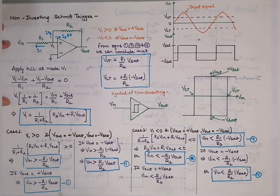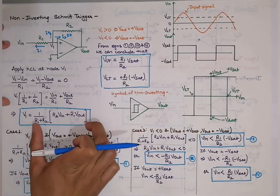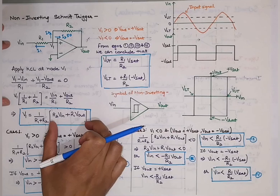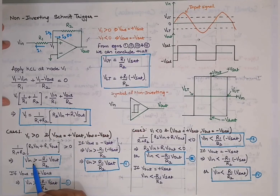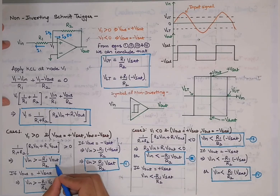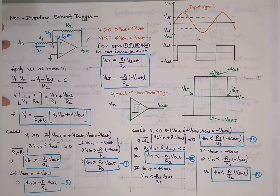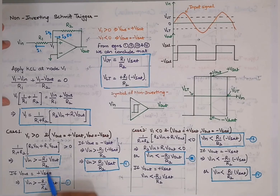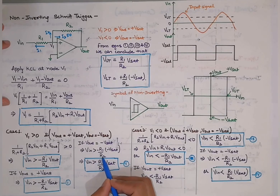Case 1: V1 > 0. If V1 > 0, then R2·Vin + R1·Vout > 0, which gives Vin > −(R1/R2)·Vout. Since Vout can be either +Vsat or −Vsat, if Vout is at +Vsat then Vin > −(R1/R2)·Vsat, and if Vout is at −Vsat then Vin > (R1/R2)·Vsat.